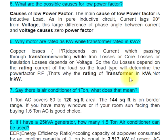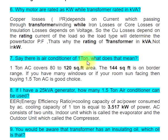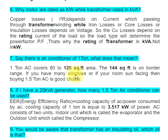Question 7: Say there is an air conditioner of 1 ton — what does that mean? A 1-ton AC covers 80 to 120 square feet area. The 144 square feet is the border range. If you have many windows or if your room is sun-facing, then buying a 1.5-ton AC is a good choice.